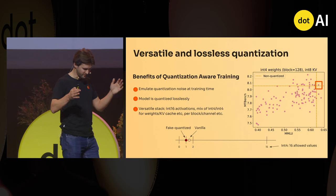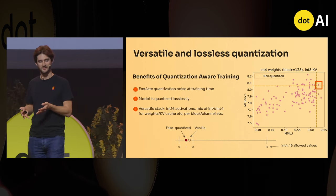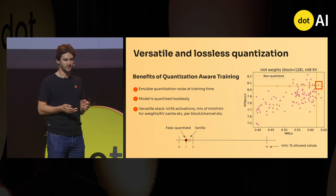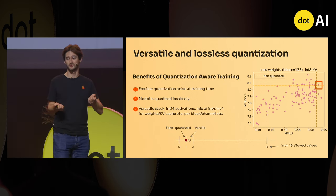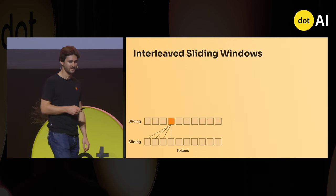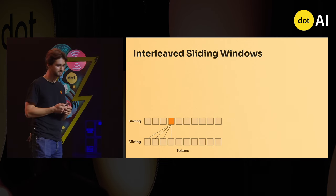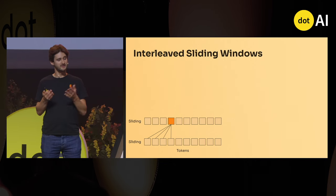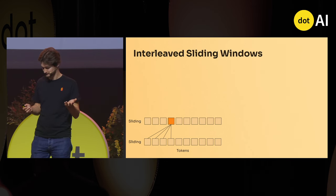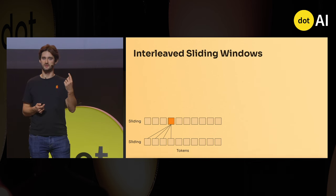Now we have Ministral 3B, we know how to make it fit on the chip, and it doesn't lose any accuracy — but we want to do even better, because we want to handle even longer context. The last technical thing I want to share with you is called interleaved sliding windows. The idea is super simple.